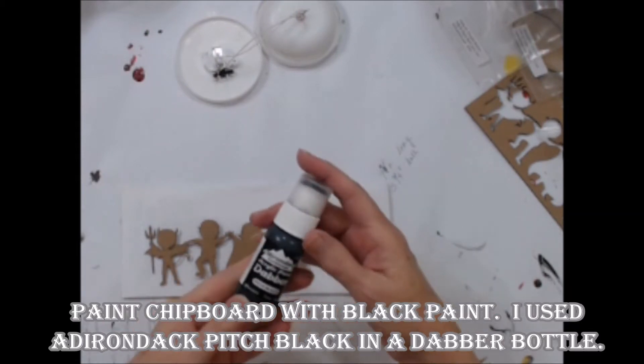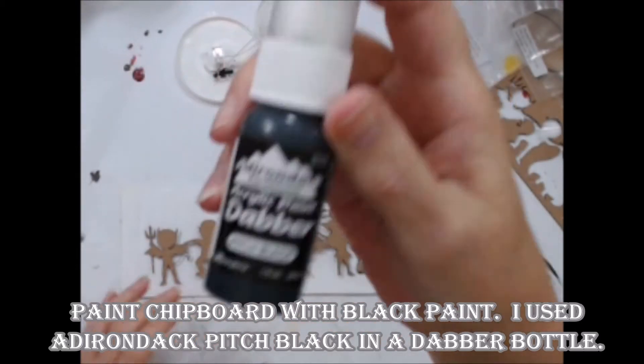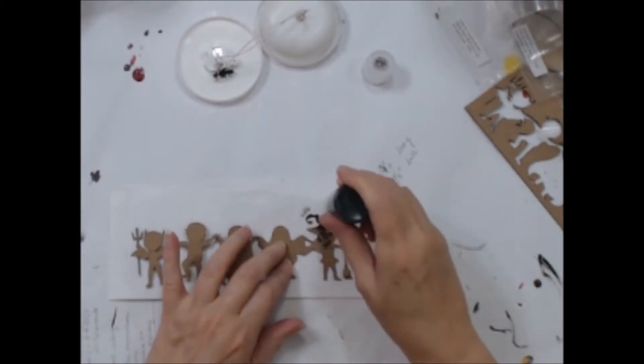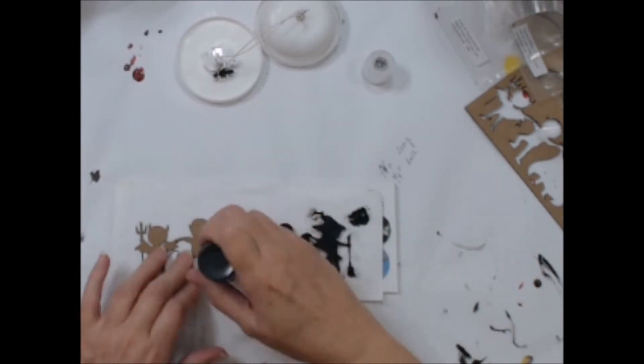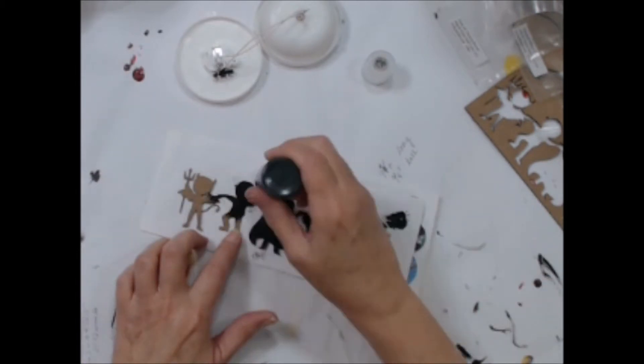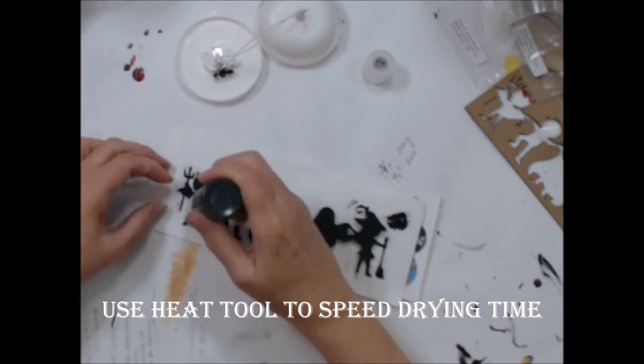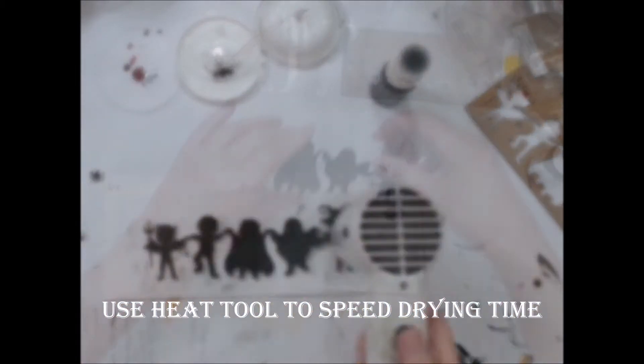Next, I painted the chipboard with black acrylic paint. I used the Adirondack pitch black paint I had in a dabber bottle, but any black acrylic paint will work. If you are going to make several of these, go ahead and paint all your chipboard pieces with the black paint and let them dry.